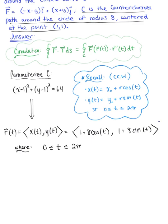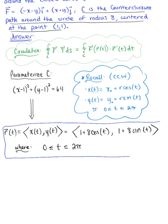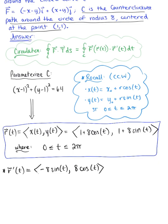We use this parametric description to find the tangent vector. Taking the derivative, r'(t) = (-8sin(t), 8cos(t)). We can pull out the scalar factor of 8, giving r'(t) = 8·(-sin(t), cos(t)).